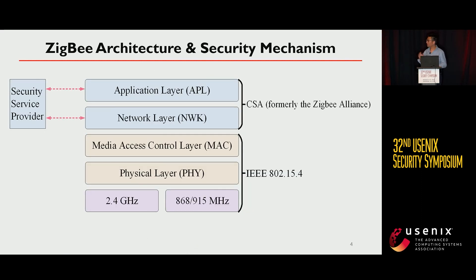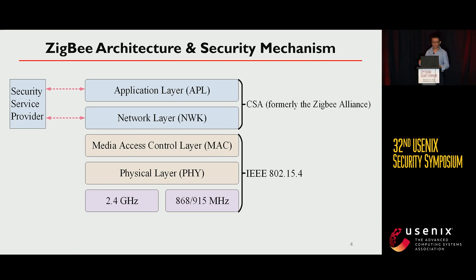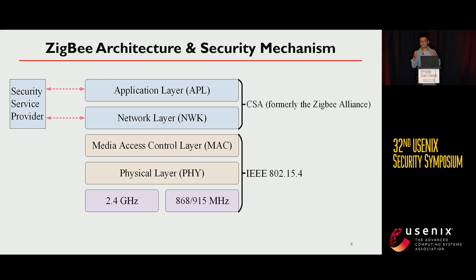This is the architecture of Zigbee. The Zigbee architecture includes four layers from bottom to top: the physical layer, MAC layer, network layer, and application layer. As one of the most popular wireless communication protocols, security is one of the major concerns in the Zigbee standard. Zigbee includes security mechanisms in both the network layer and application layer.